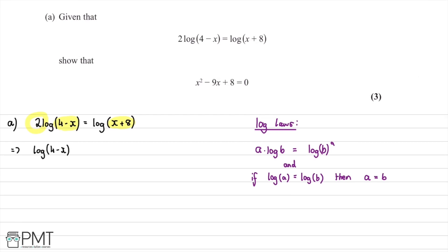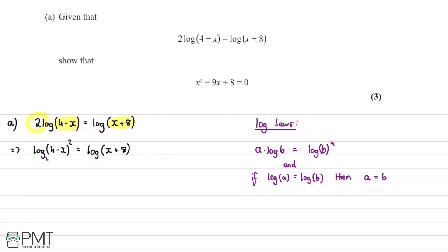Now we have log((4 − x)²) = log(x + 8). Since log(a) = log(b) implies a = b, we get (4 − x)² = x + 8. Expanding the left side: 16 − 8x + x² = x + 8.